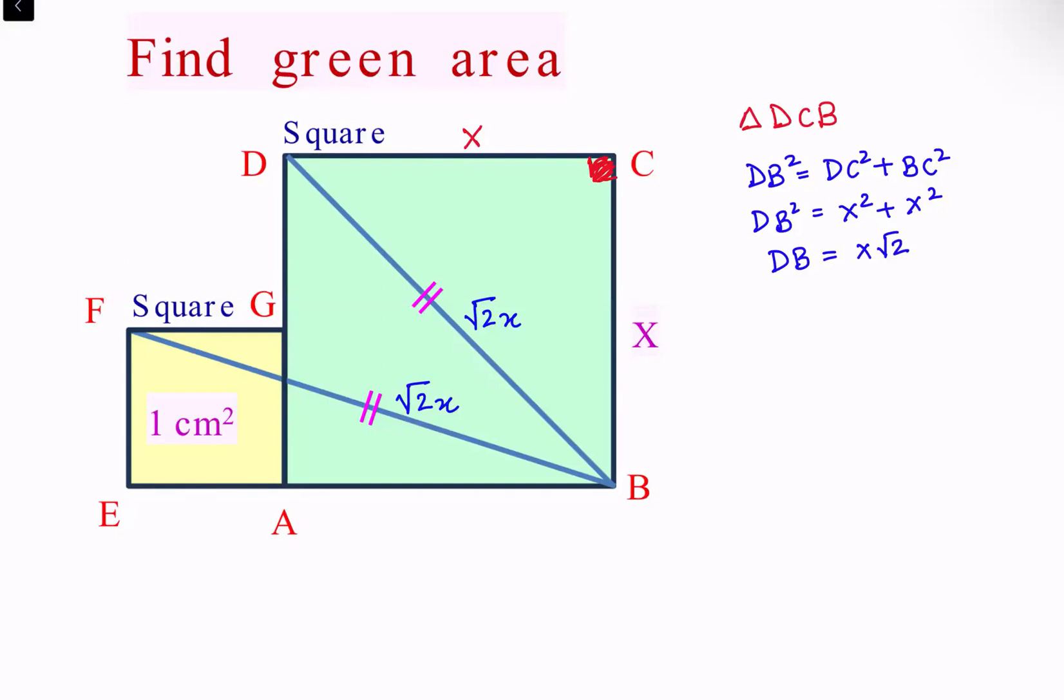Now let's look at triangle FEB. As the area is 1 centimeter square for this square, the sides are 1 centimeter each. This length is 1 centimeter, this length is also 1 centimeter, and AB is X centimeter.